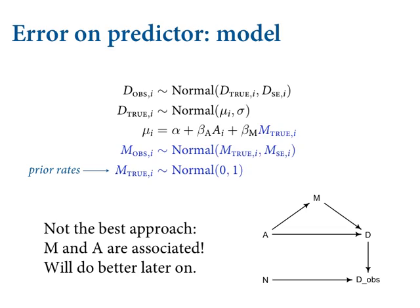You've got to put in a prior for M_true. In this example I set it to normal(0,1) because it's a standardized variable. But this ignores information in the data — if you tell me the age of marriage in a state, you get information about the marriage rate. Look at the DAG: age of marriage influences marriage rate, so we can have a better prior if we use all the regression information. We could put the whole DAG into the model; if we do it all at once, there's even more information to pin down the true values.